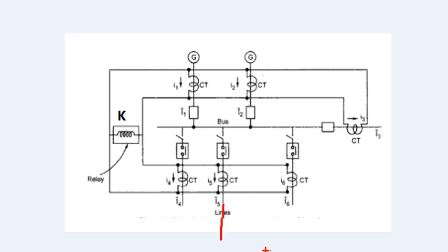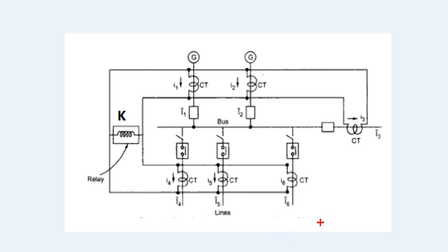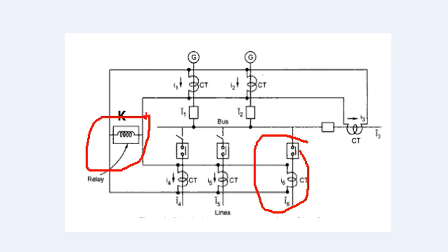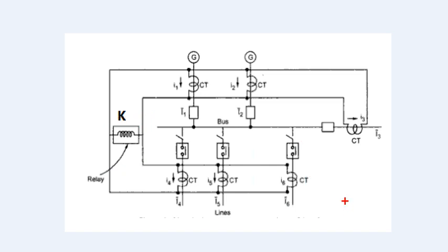We can use normal CTs, but we need a special iron core. Suppose there is a heavy fault outside the zone. In that case, the CT may become saturated. When the CT is saturated, it can produce a false differential signal. This is a sensitive issue — an external fault could cause the relay to trip the entire bus bar incorrectly, which is a problem we need to address.